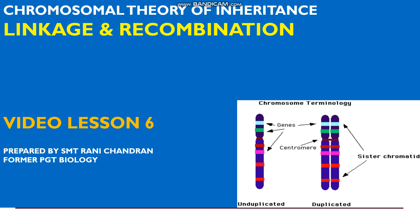In 1902, due to advancement in the development of microscopy, two biologists, Sutton and Bovery, proposed the Chromosomal Theory of Inheritance. This theory was proposed based on the similarities noticed in the behavior of chromosomes and the factors or genes.